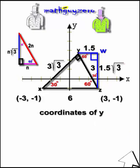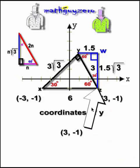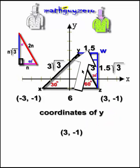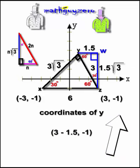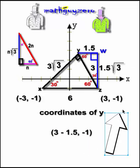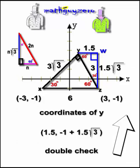So the coordinates of y are going to be, from this 3, negative 1, we're going to go negative 1.5 to the left. That's going to be our new x-coordinate. We're going to subtract 1.5. And in our y-coordinate, we're going to have to add to negative 1, this 1.5 times the square root of 3. So that is the answer, but we're going to have to double-check that.